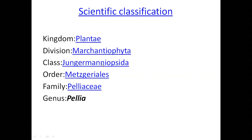In the Hepaticopsida, we usually study Marchantia. We will discuss four members: Pellia, Porella, Riccia, and Marchantia. The classes are divided into Hepaticopsida. In the course, Hepaticopsida and Jungermanniopsida — some scientists follow the Hepaticopsida classification.